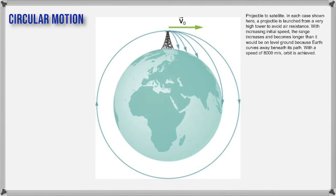Whatever horizontal velocity you give it, the object falls 4.9 meters every second. So the minimum velocity of a satellite should be 7.9 kilometers per second. If you give it 7.9 km/s, in one second it moves 7.9 kilometers horizontally and falls 4.9 meters vertically — the same as the curvature of the Earth. That is called the orbital velocity.